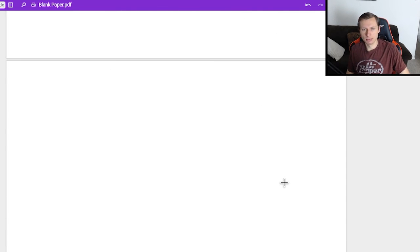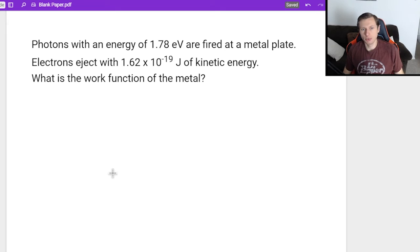Now let's look at one more. Photons with an energy of 1.78 ev, electron volts, we'll talk about that in a minute, are fired at a metal plate. Electrons eject with 1.62 times 10 to the minus 19th joules of kinetic energy. What is the work function of the metal?